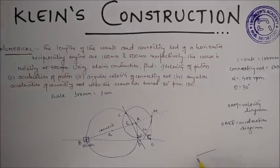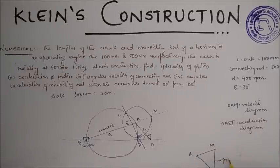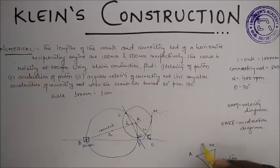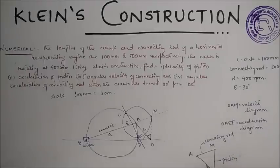Now let this O, A, M be the velocity diagram. Here O-M is piston and A-M is connecting rod and O-A is crank.